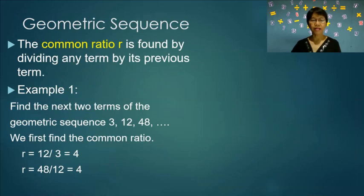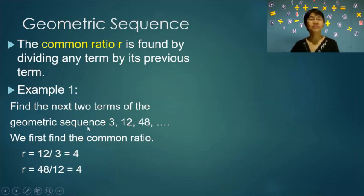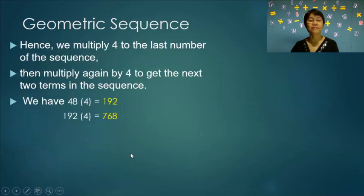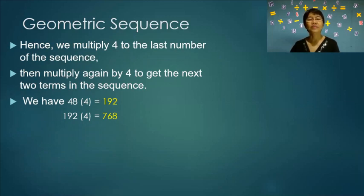The common ratio r is found by dividing any term by its previous term. Example 1: Find the next two terms of the geometric sequence 3, 12, 48. Dividing 12 by 3 gives 4, or 48 divided by 12 also gives 4. We multiply 4 to each successive term to get 192 and then 768.